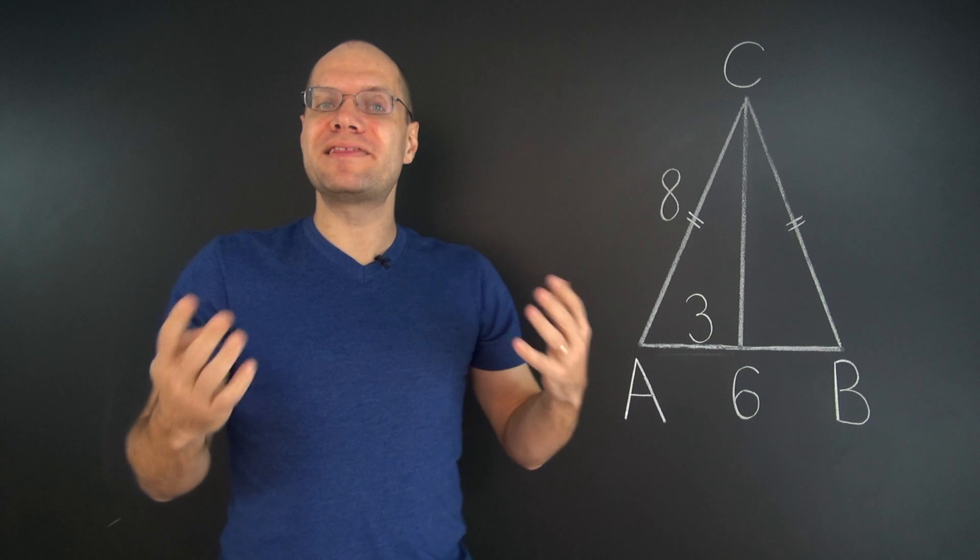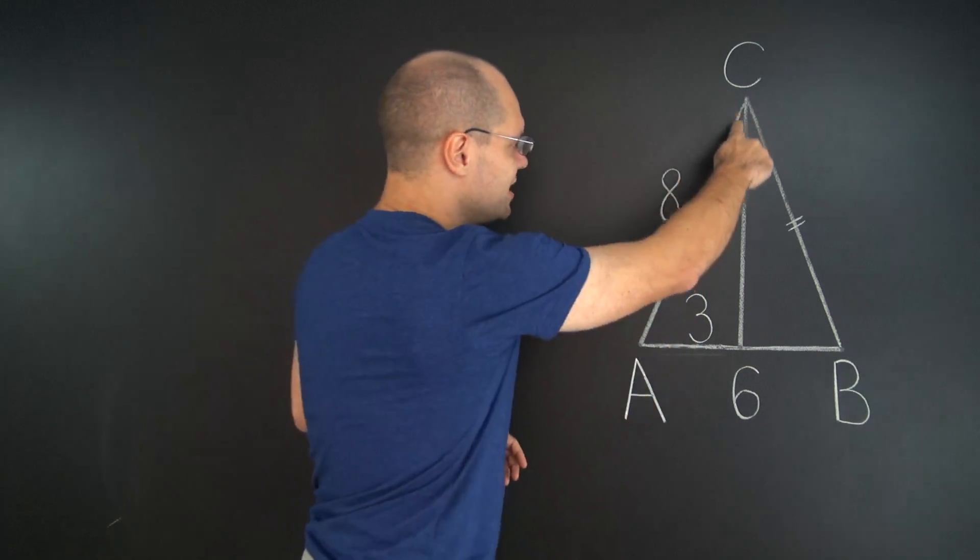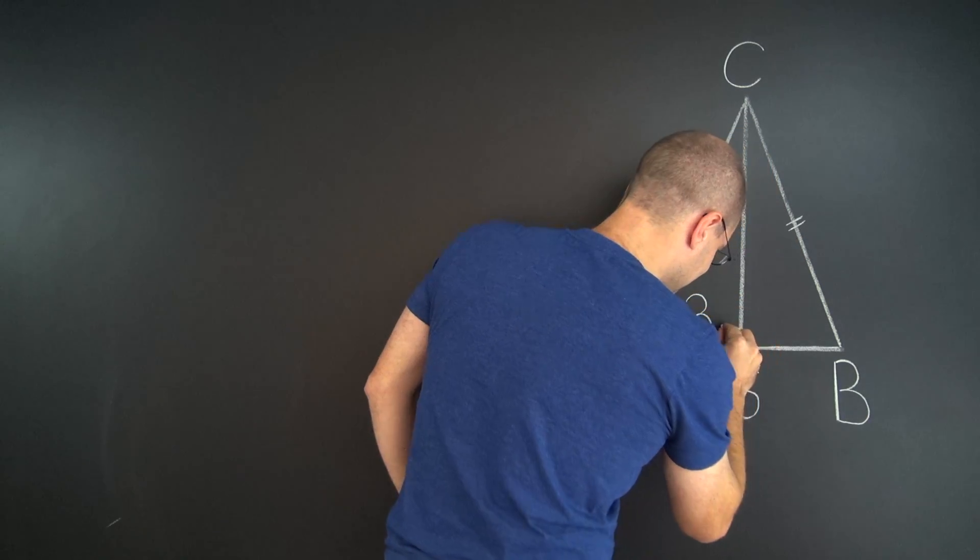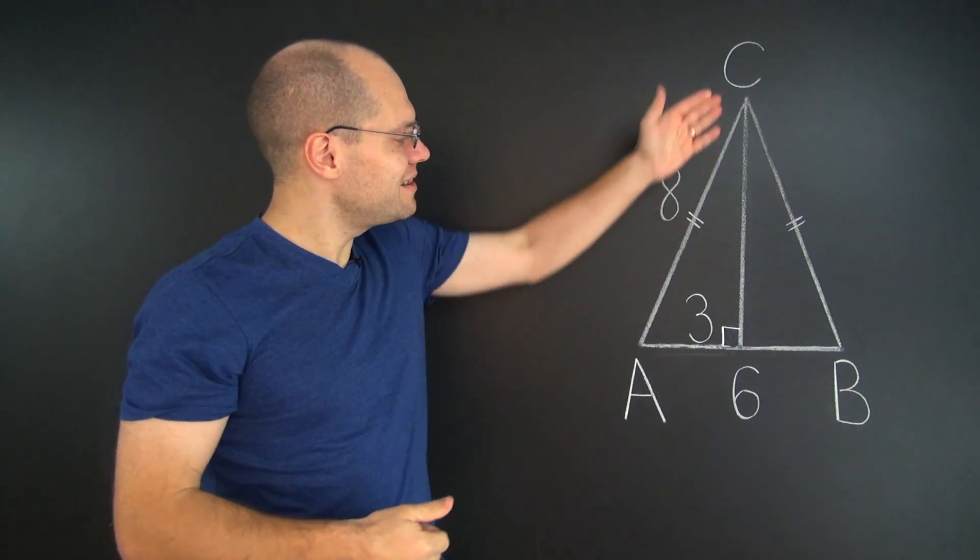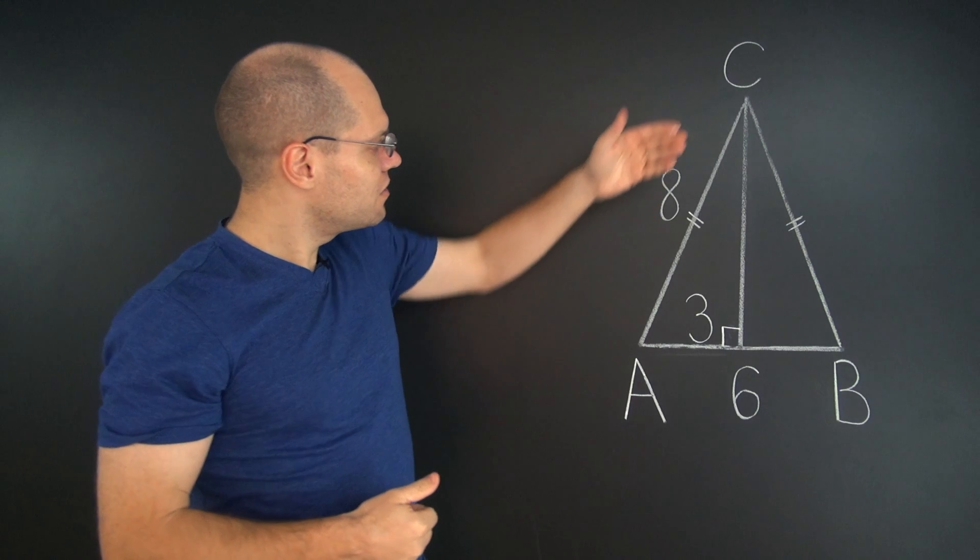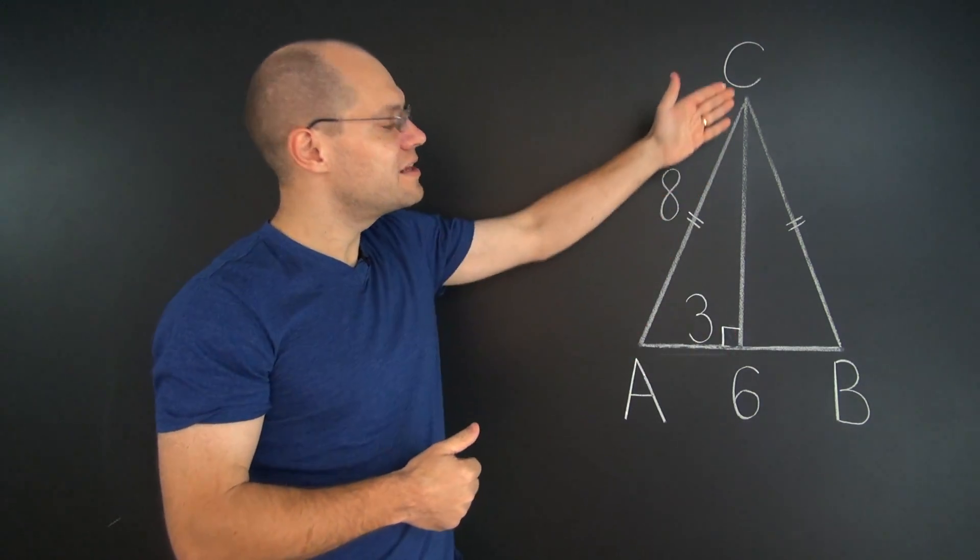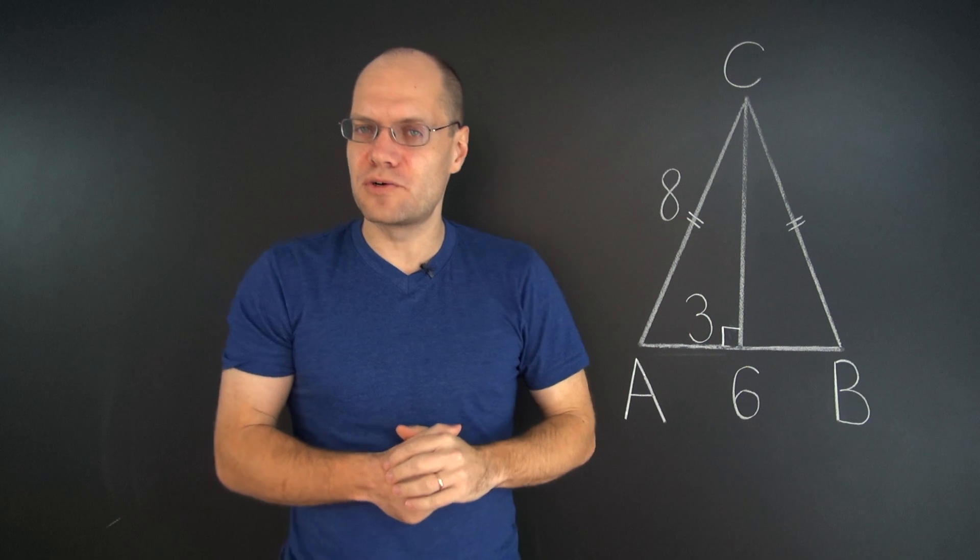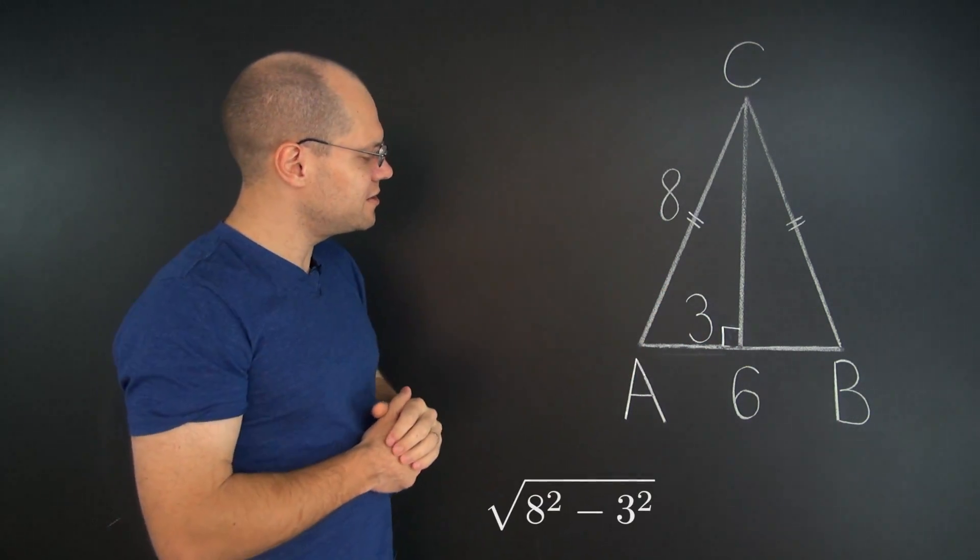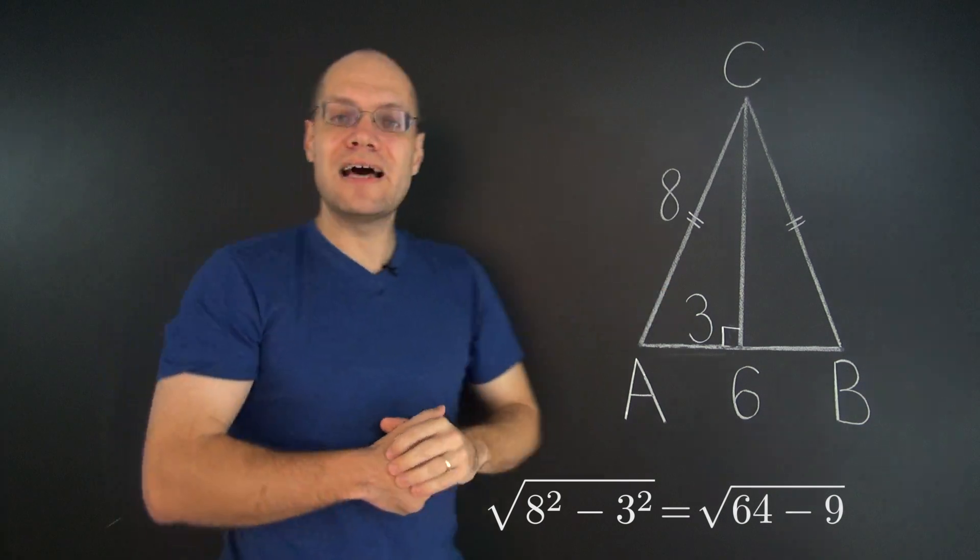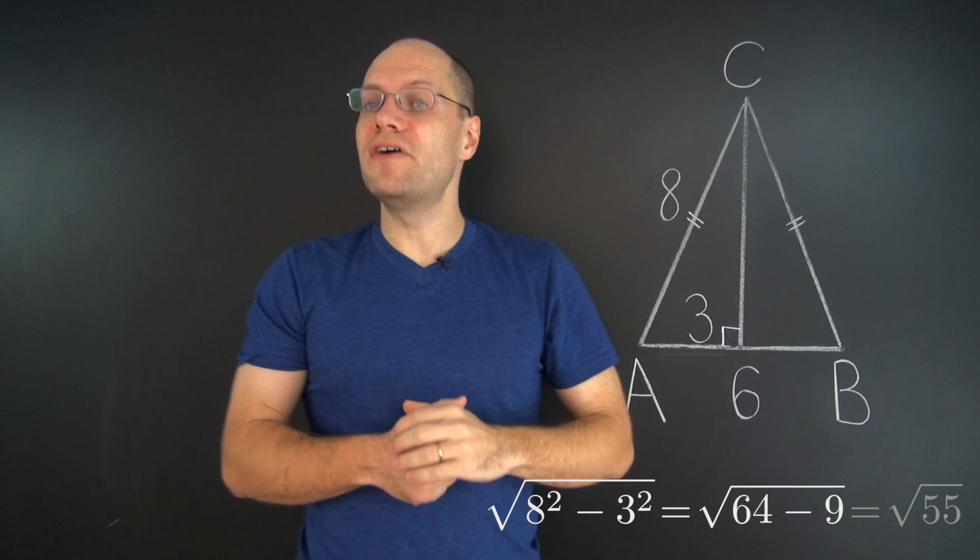And we can now apply the Pythagorean theorem to this right triangle to determine the length of the height. The hypotenuse is 8, and one of the sides is 3. Therefore, the other side is the square root of 8 squared minus 3 squared, or 64 minus 9. In other words, it's the square root of 55.